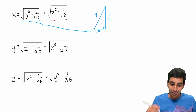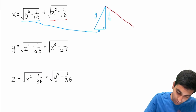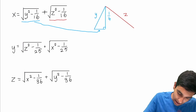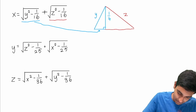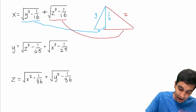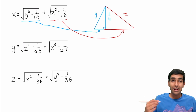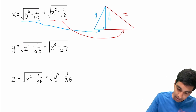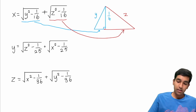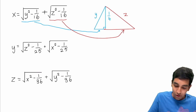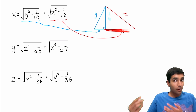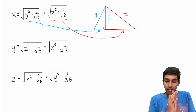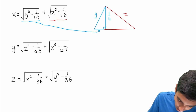We can use very similar logic. So let's say we have z as the hypotenuse, and this side here is precisely the square root of z squared minus 1 over 16. Together, the two legs — the square root of y squared minus 1 over 16 and the square root of z squared minus 1 over 16 — form x.